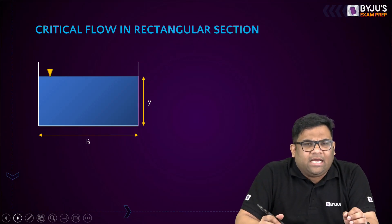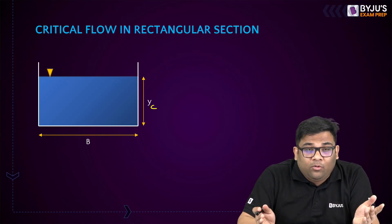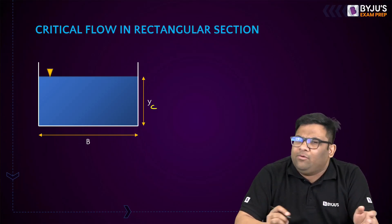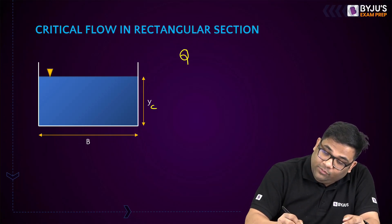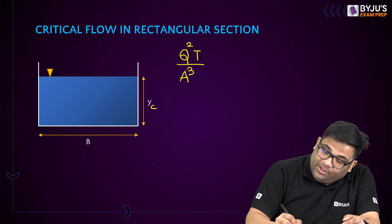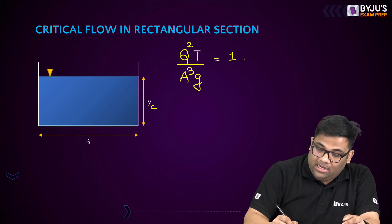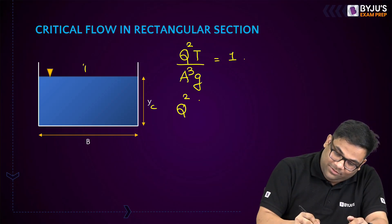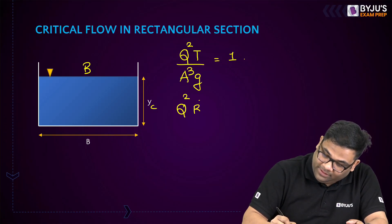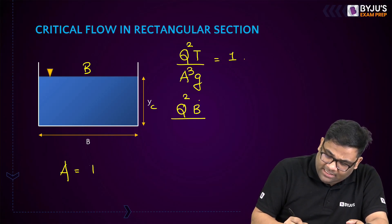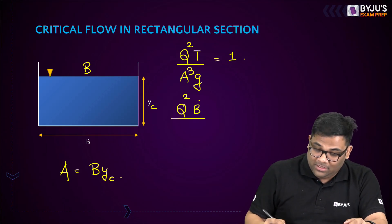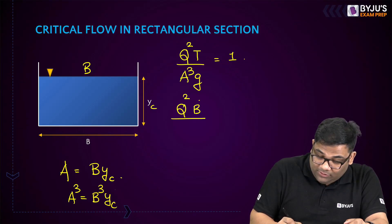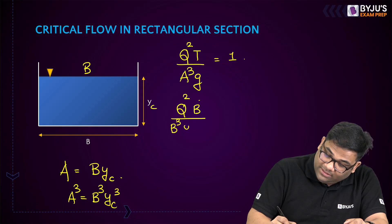This is a rectangular channel with critical depth Yc and width B. Using Q squared T by A cubed G equals 1: the top width T equals B, and the area A equals B times Yc, so A cubed equals B cubed times Yc cubed. After substituting, B cancels out, giving Q squared into B divided by B cubed Yc cubed G equals 1, which simplifies using small q (discharge per unit width) as Q divided by B.